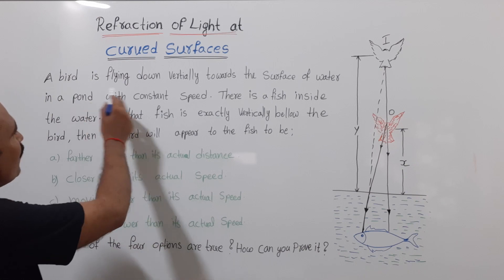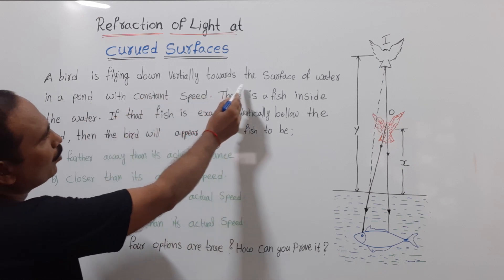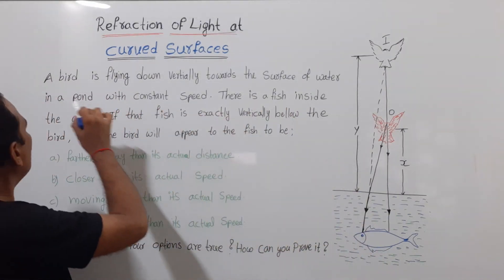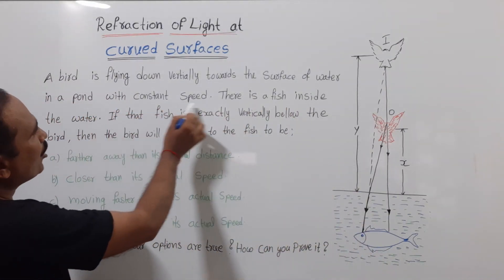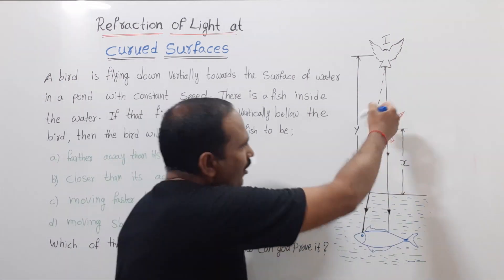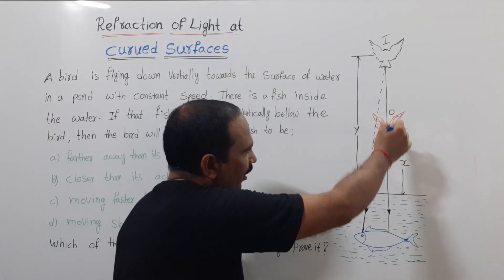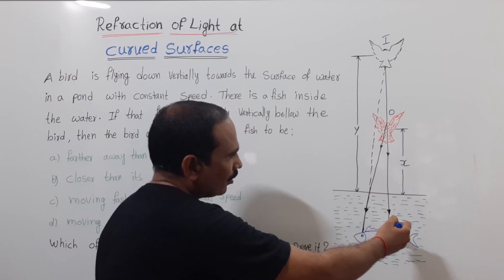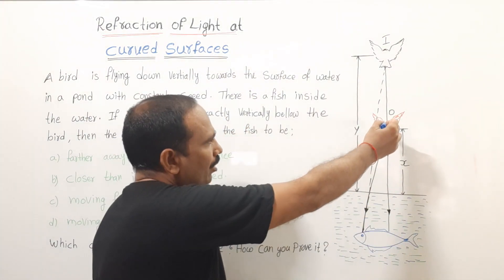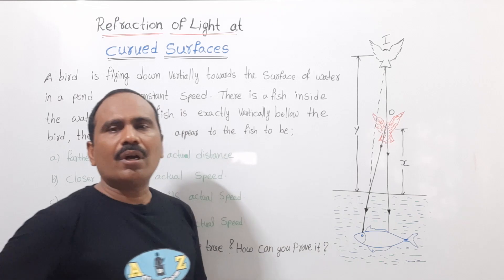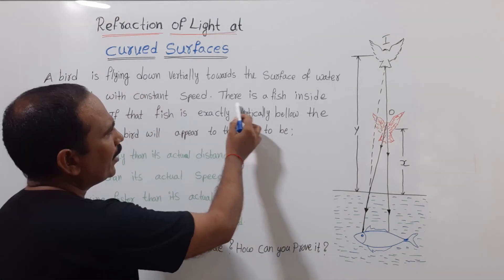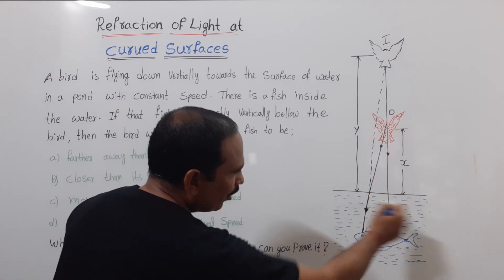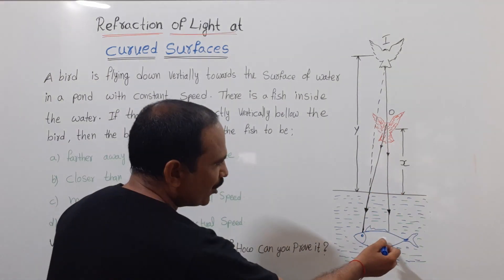A bird is flying down vertically towards the surface of water in a pond with a constant speed. The surface of the water is there, and the bird is flying down towards it. There is a fish inside the water in the pond.